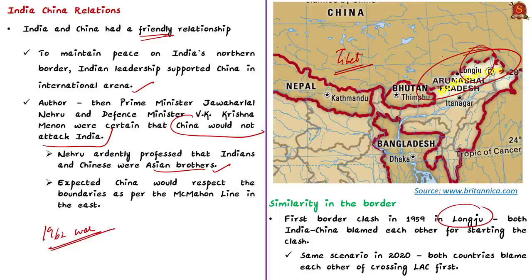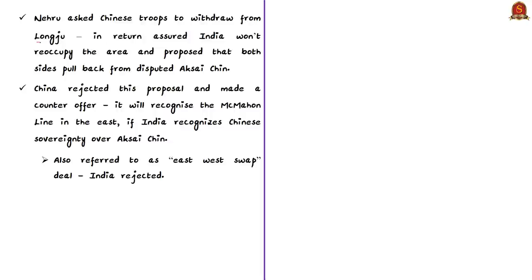In 1959, Nehru asked Chinese troops to withdraw from Longju, assured India would not reoccupy the area, and proposed both sides pull back from disputed Aksai Chin. By then, China had already unilaterally built a strategic highway in Aksai Chin, which even today remains under China's control. China rejected Nehru's proposal and made a counter-offer — it would recognize the McMahon Line in the east if India recognized Chinese sovereignty over Aksai Chin. This 'east-west swap deal' was rejected by India as it would mean abandoning legitimate claims over Aksai Chin.